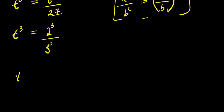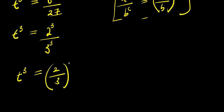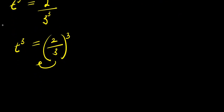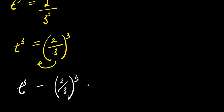We are going to have t to the power of 3 equals 2 divided by 3, to the power of 3. So from here, I can move this over, and it's going to change to negative. So I'm going to have t to the power of 3 minus 2 over 3 to the power of 3, and this equals 0. Now if you observe, this is to the power of 3 and this is to the power of 3.